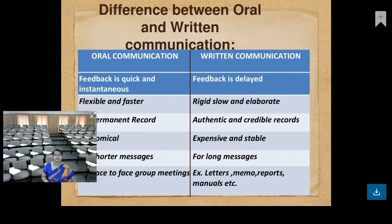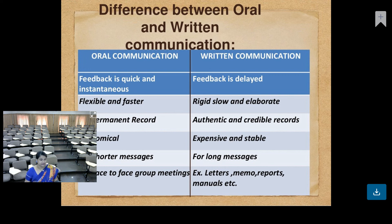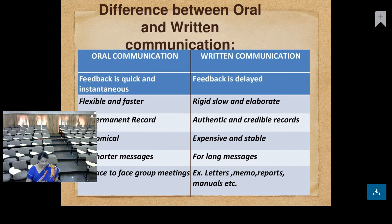It is a record of spoken words. The difference between written and oral communication: oral feedback is easily and immediately available, while written feedback is delayed because people may not respond immediately. Oral is flexible; written is rigid. Oral will not have a permanent record, but written communication provides authentic and credible records. Written is expensive and stable; oral is economical. Oral messages hold good for short messages, but for lengthy messages — like full company rules — send a written document so people can go through it. Letters, memos, and reports are written; face-to-face meetings are oral.